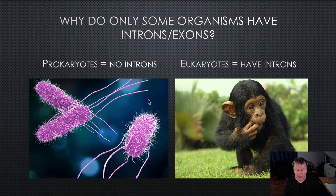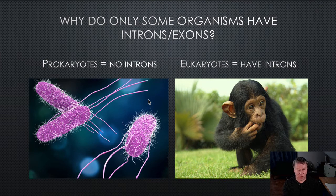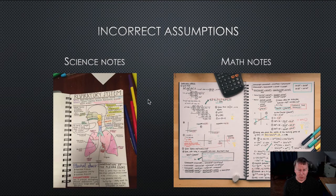Eukaryotes, at some point along the way, evolved to have introns. Why? The fact that introns are prevalent in all eukaryotic cells suggests they're important. They offer some kind of benefit and that's the reason they've stuck around. So what could that benefit possibly be?